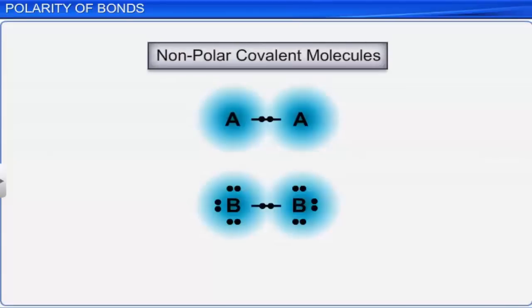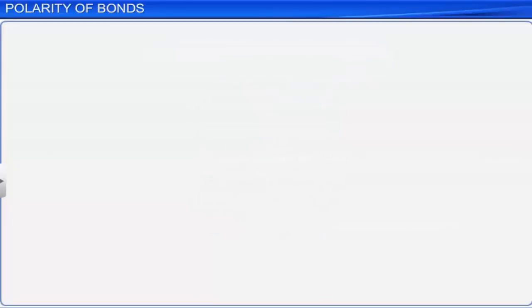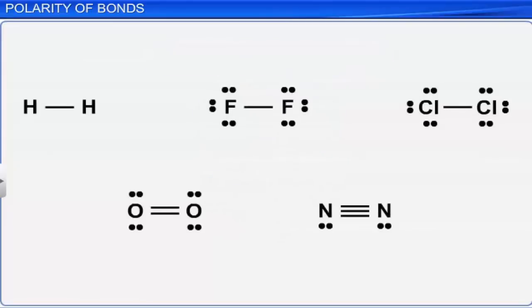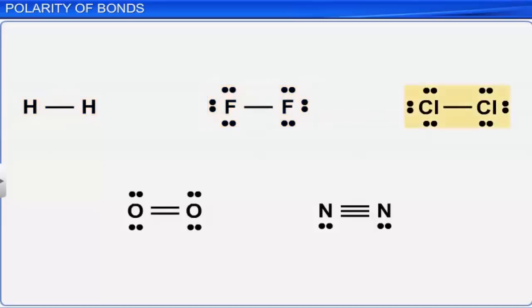Examples of non-polar covalent molecules are hydrogen, fluorine, chlorine, oxygen, and nitrogen.